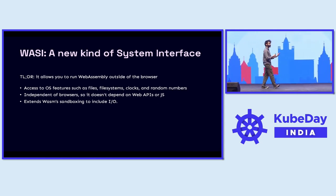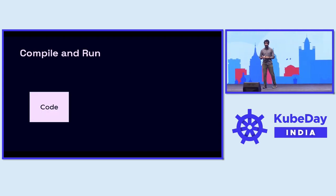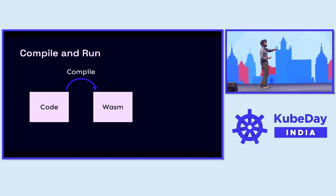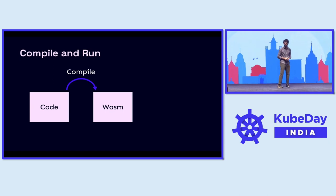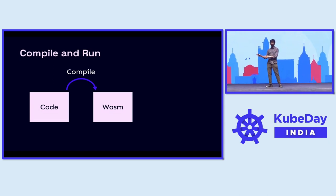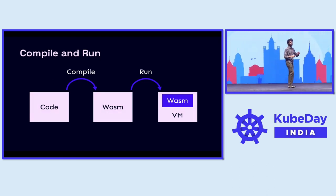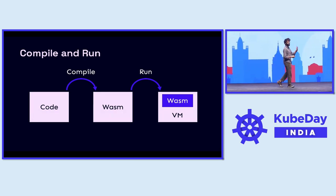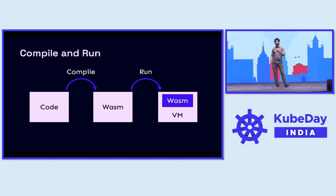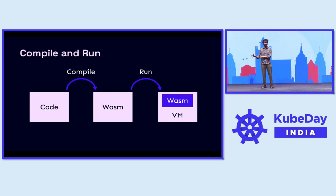It also includes sandboxing for things like input and output. Just to visualize how it works: you have your code, write it in any language — TypeScript, JavaScript, Python, Go, Rust, whatever — you compile it to a WASM format, and this can run in any place that has a WASM runtime. So it's independent of architecture — Intel, Mac, ARM — independent of operating systems — Linux, Windows, Mac. You can run it on Kubernetes, on your Raspberry Pi, in the cloud. You can run it anywhere as long as there is a WASM runtime.